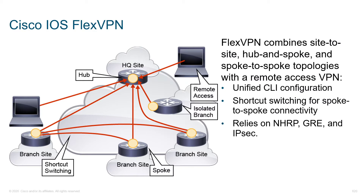Cisco's IOS FlexVPN is an enhancement to VPN configuration types that we've discussed earlier. This is actually going to combine everything that we've talked about: site-to-site, hub-and-spoke, spoke-to-spoke, as well as remote access configurations. FlexVPN is called Flex because it offers a unified CLI configuration to configure all types of VPNs without having different logical constructs with different logical rules or restrictions that apply to each of them.